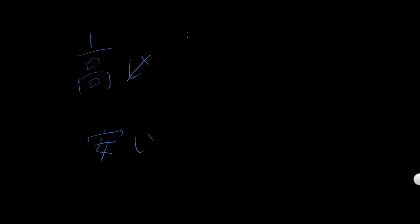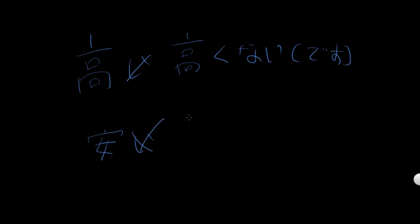Let's have a look at these examples together. You read that kanji as 高い — it's an イ adjective. Take off the イ and add くない. It's an イ adjective — take off the イ, keep the やす, and add くない. So やすくないです. Pretty straightforward, hopefully.